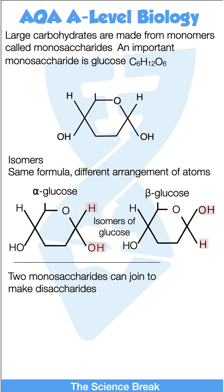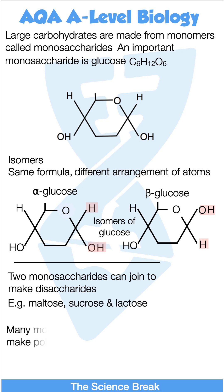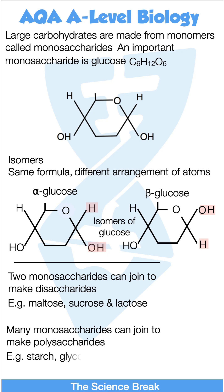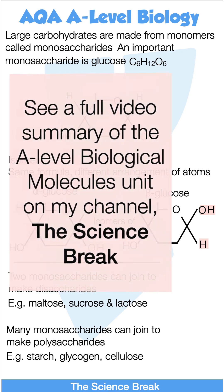Remember, two monosaccharides can join to make disaccharides — for example, maltose, sucrose, and lactose. And many monosaccharides can join to make polysaccharides — for example, starch, glycogen, and cellulose.